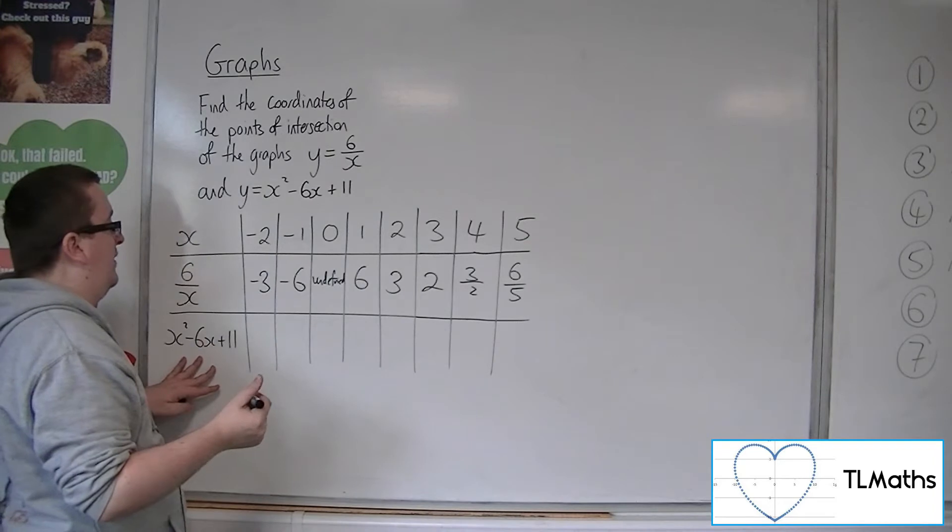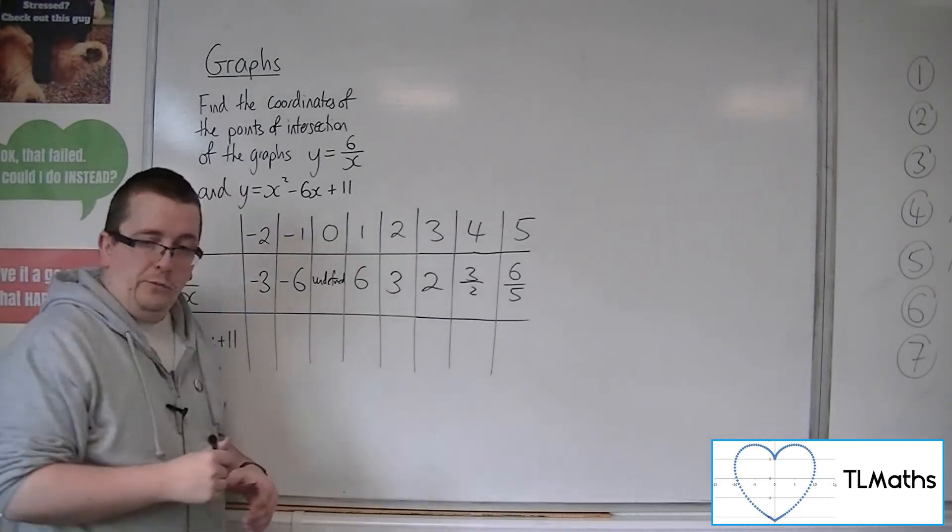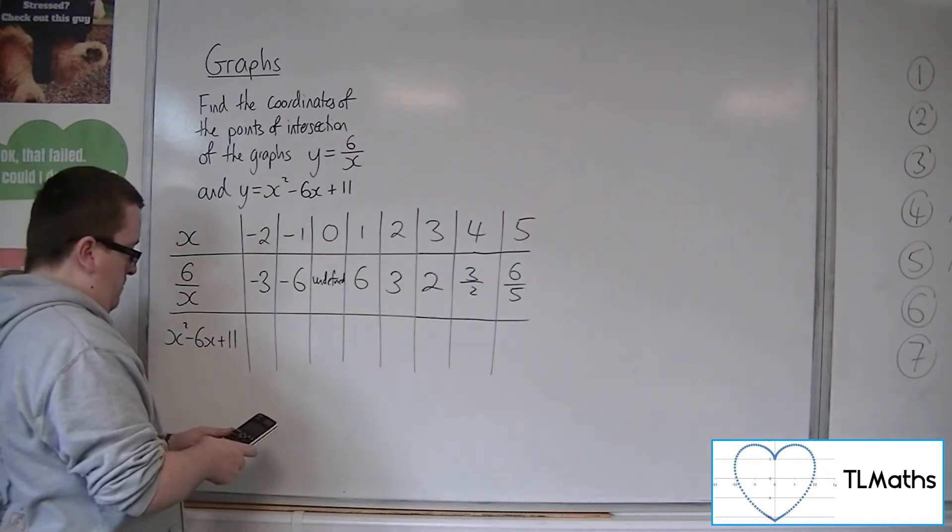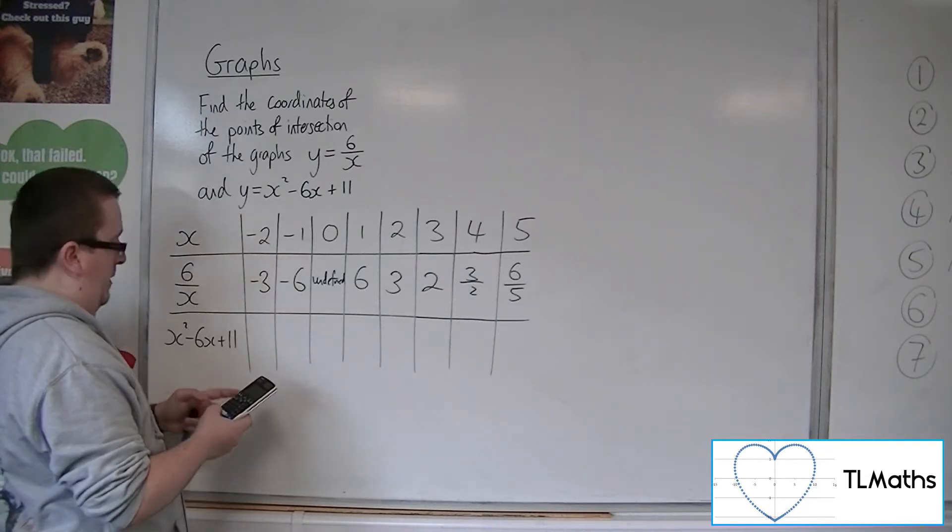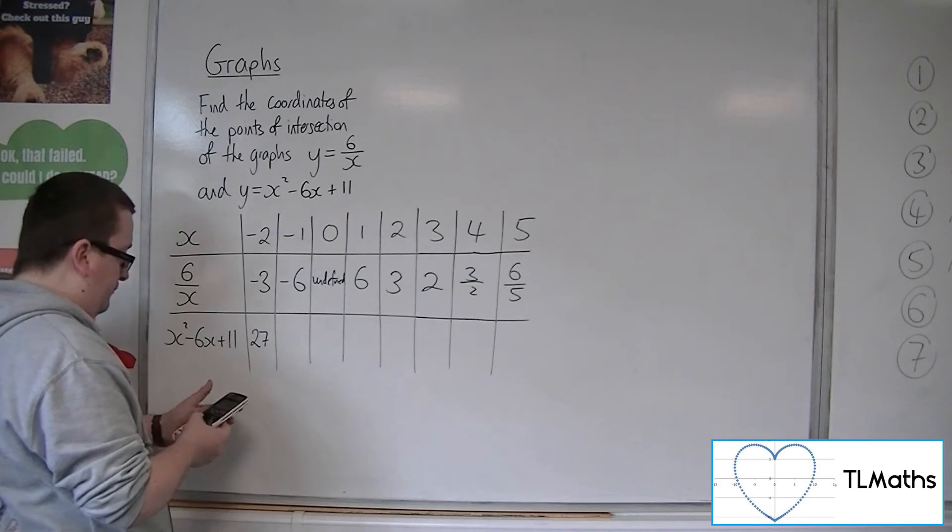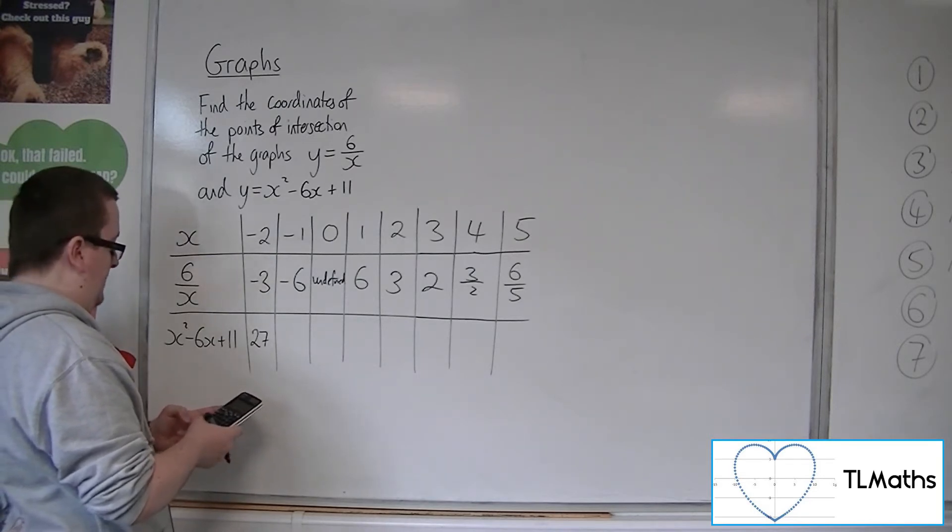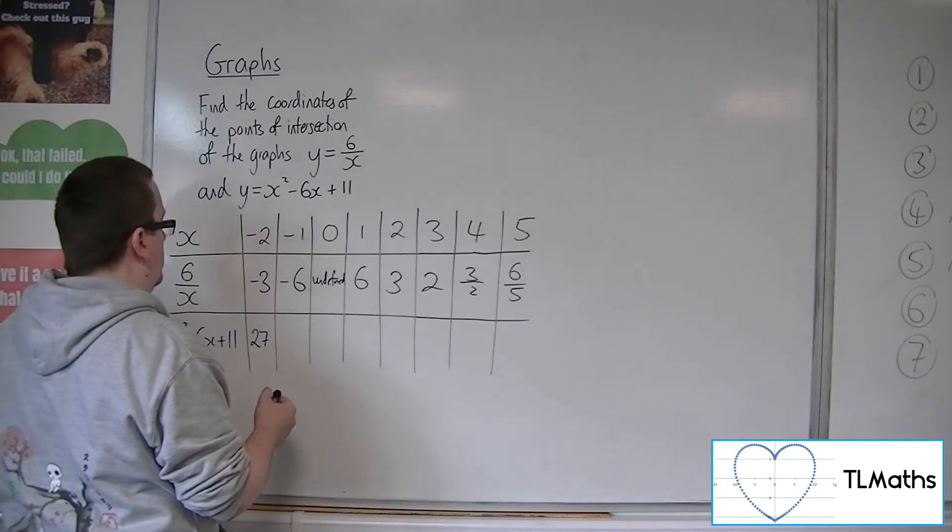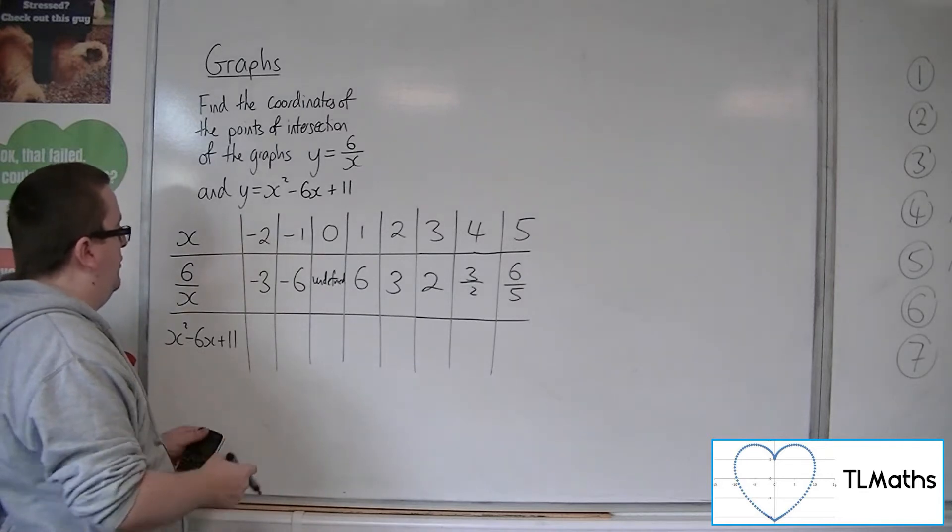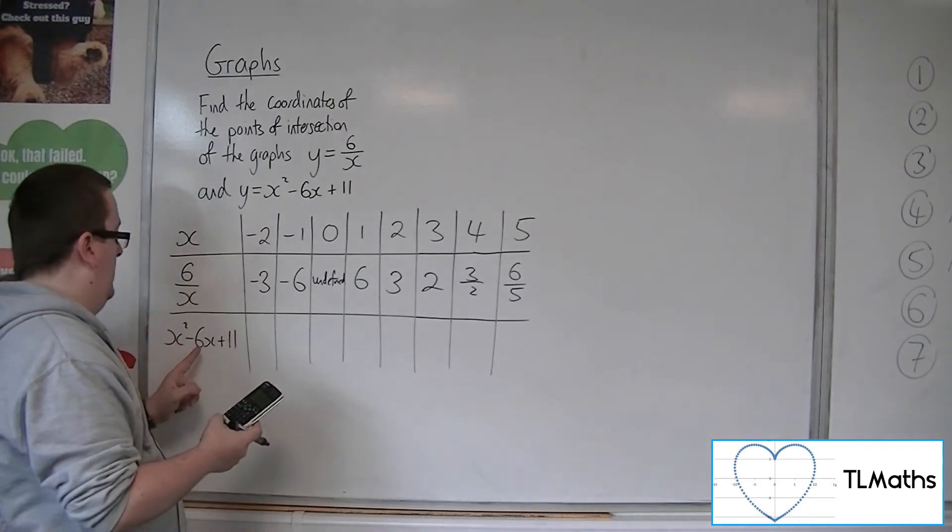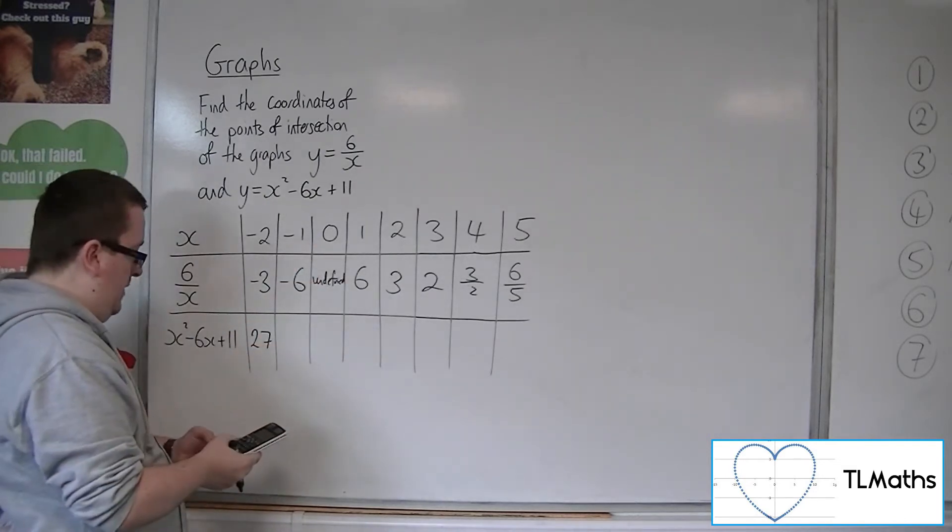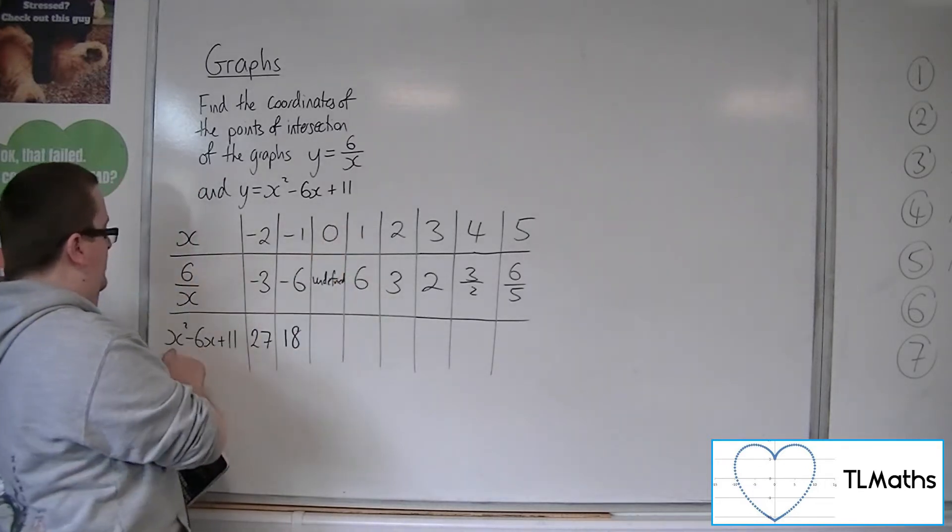Now, for y equals x squared minus 6x plus 11. So I should probably use my calculator to help, just make sure I don't make any mistakes. So we're going to have minus 2 squared, so 4, take away 6 times minus 2, so plus 12, plus 11, so 27. And then we've got minus 1, so we'd have 1 plus 6 plus 11, so 18. When x is 0, we'll have 11.